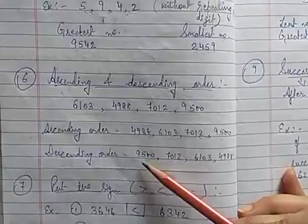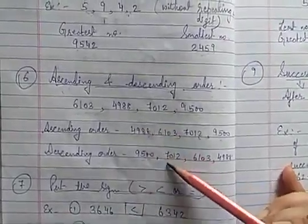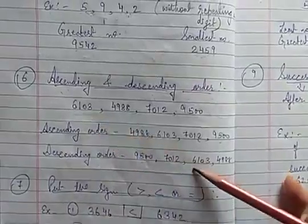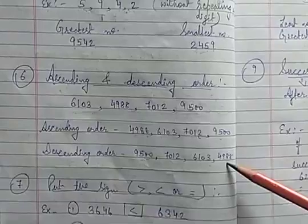Now for descending order, we will first write the bigger one. So the bigger one is 9500. Now next is 7012, then next is 6103 and then next is 4988.